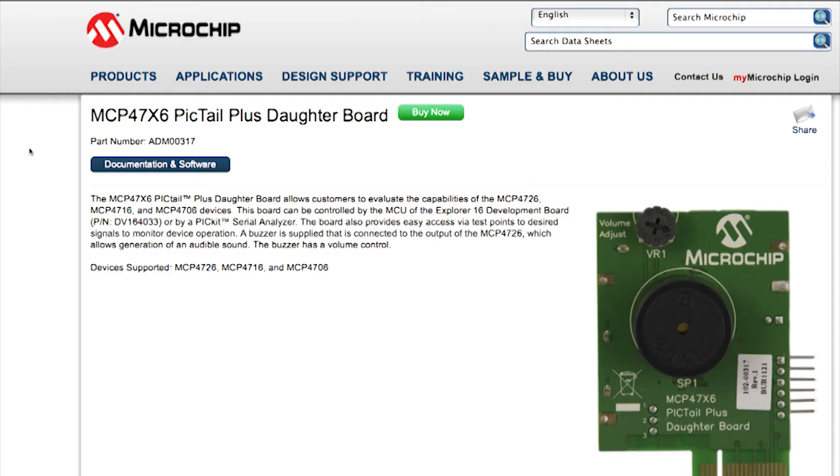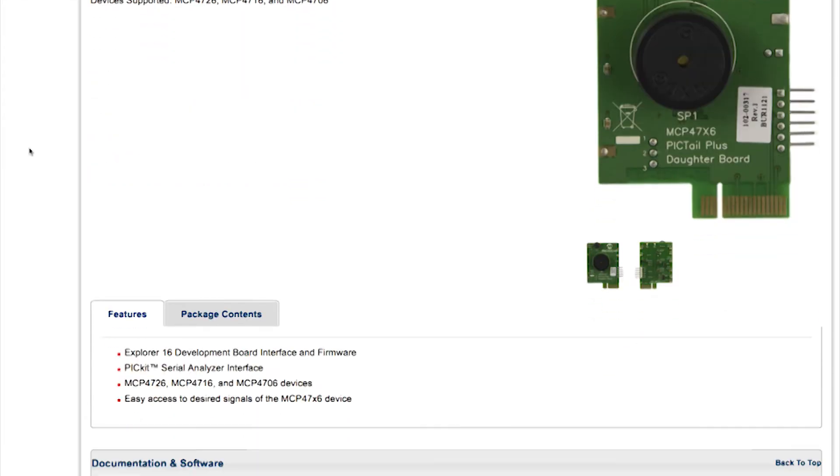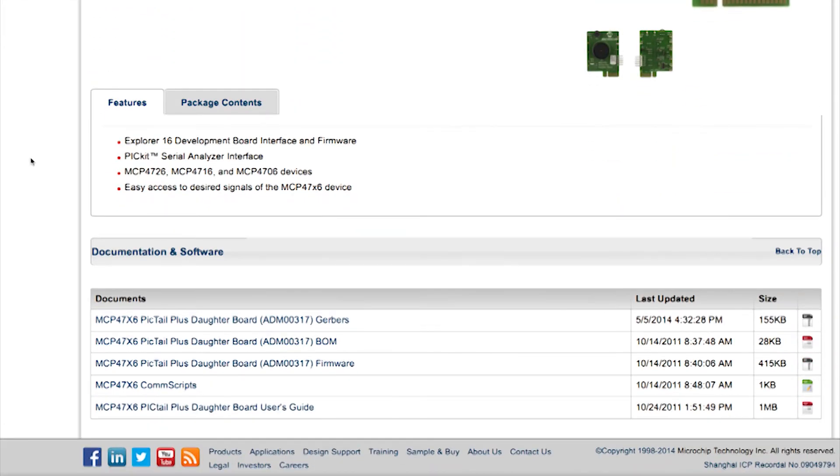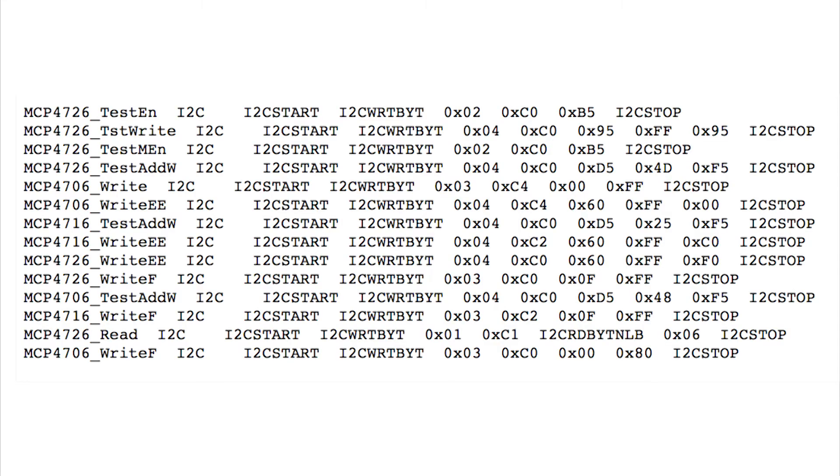Once there, navigate to the MCP47X6 PICTEL product page and open the MCP47X6 EV commscripts.txt file. You will need to cut and paste the contents into the PICTEL Serial Analyzer's commscript.txt file and save the file. Do not rename the file or move its location.